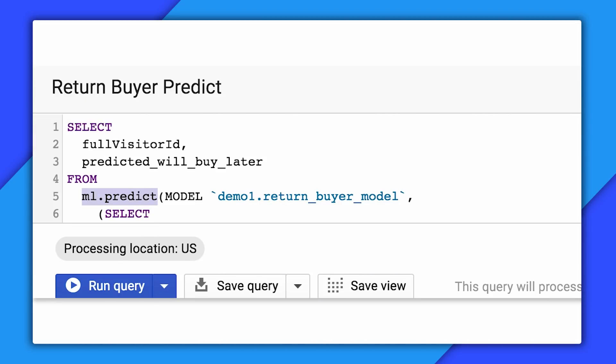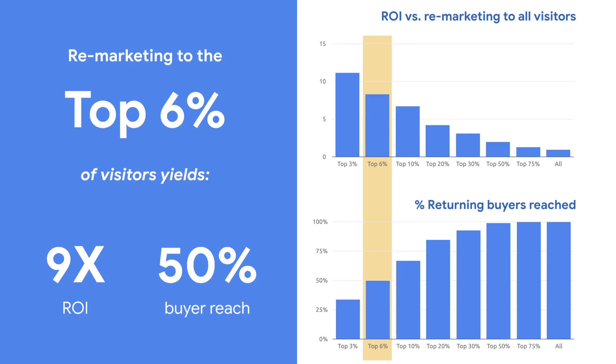Once the model is ready, just write another simple SQL query that will predict using the model name that you have given and get the predictions on new visitors. From there, you can build your BI reports and take all marketing actions you need to take on this scored visitor list. You will find that remarketing to just the top 6% of the visitors provides a 9x marketing ROI versus targeting all visitors. And what's more, you still reach 50% of the potential buyers after targeting just the 6% of the visitors.